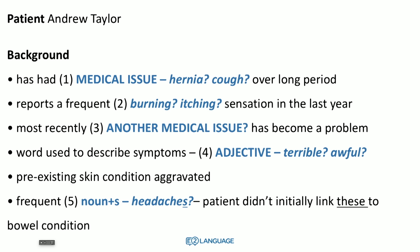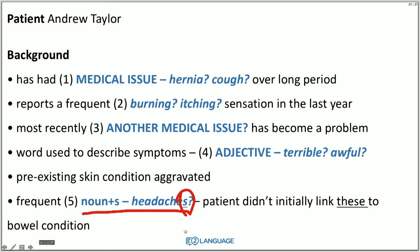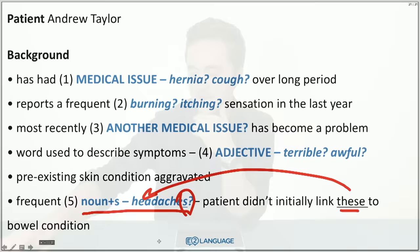Number one is going to be a singular noun — a medical issue. Number two: 'reports a frequent something sensation' — it has to be one of those gerund adjectives with an -ing ending, like a burning or itching sensation. Number three: 'most recently, something has become a problem' — another medical issue. Number four: 'word used to describe symptoms' — going to be an adjective like terrible, awful, or painful. Number five: 'frequent something' and the patient didn't initially link these — it's plural, so maybe headaches; something with an S on the end.